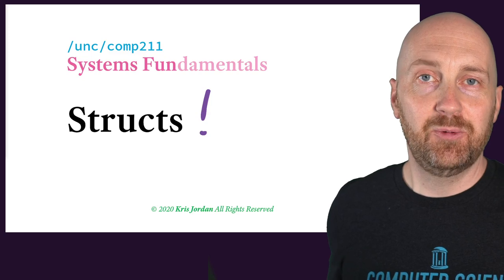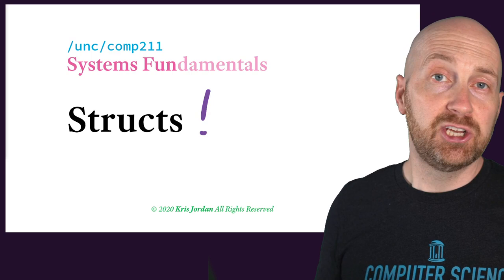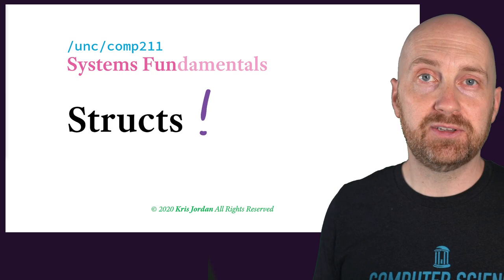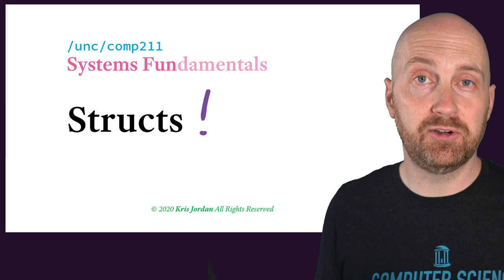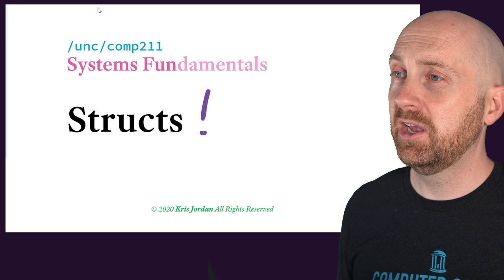With structures, you're able to define compound data types in C, just like you would define a class in Java, with the restriction that your members can only be public — what you would think of as instance variables in a Java class. We're going to have public members of a struct in C, and there aren't going to be associated methods or constructors. So really, it's just going to give us a grouping of related variables in a custom data type — a predecessor to the idea of an object in an object-oriented language.